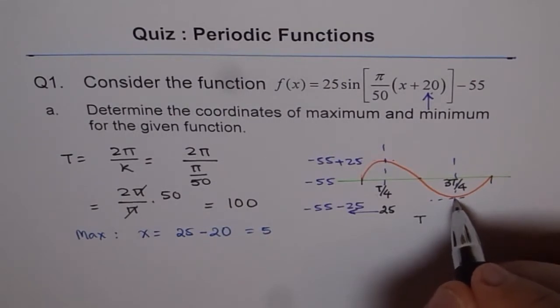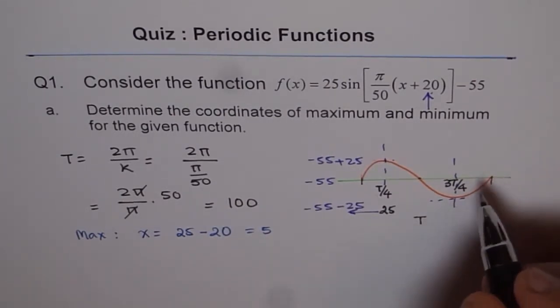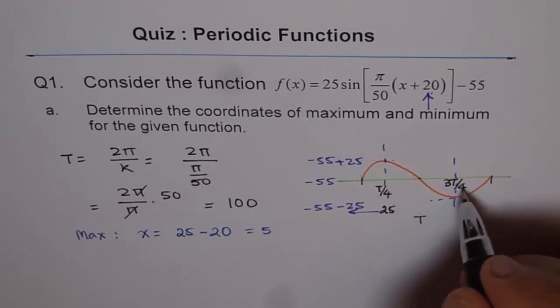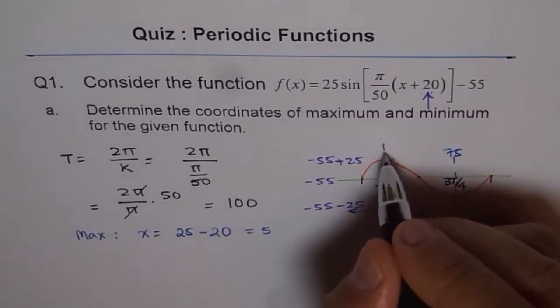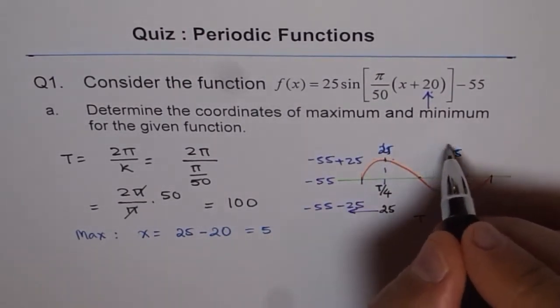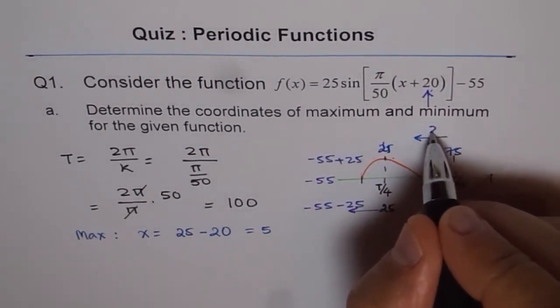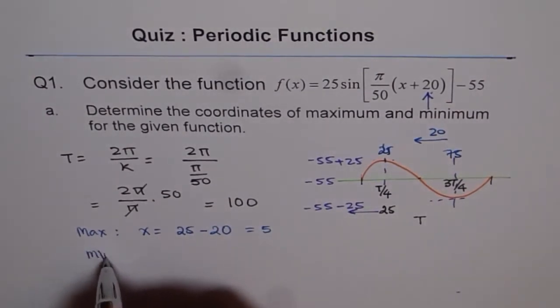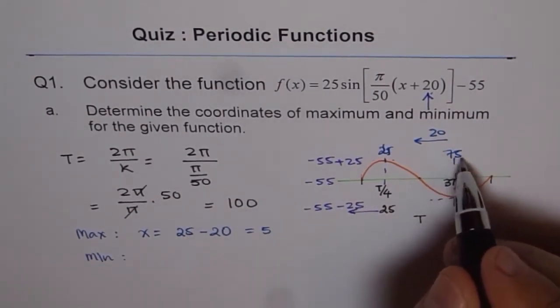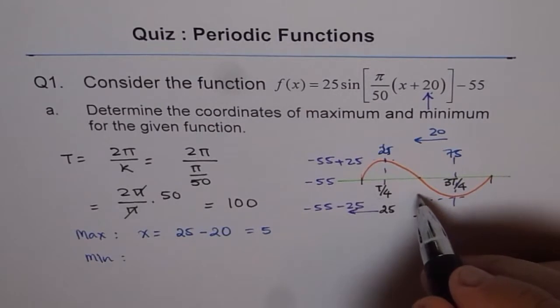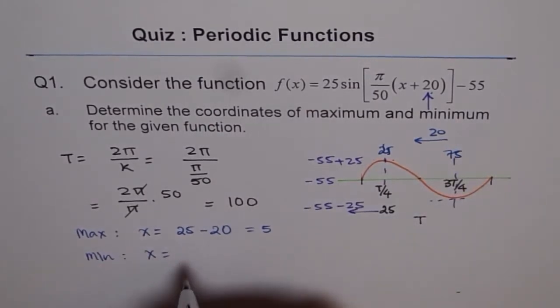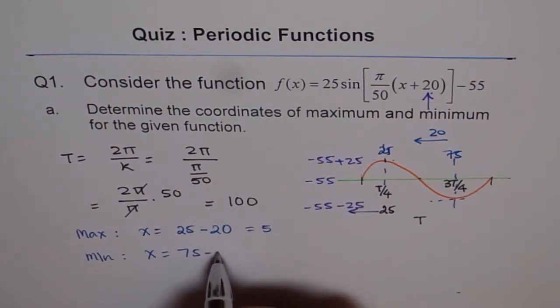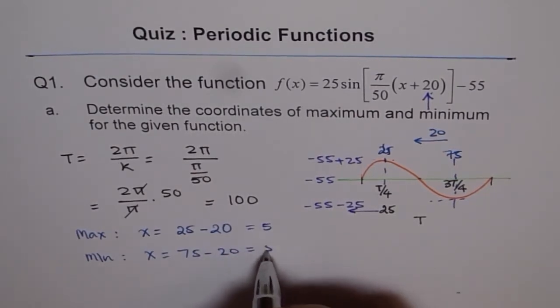And the minimum will occur, that also shifts by 20 units to the left. So 3T by 4 is actually 75. This is 75, in normal case, this is 25. Now, both move 20 units to the left. So, minimum will occur at 75 minus 20, which will give us x equals to 75 minus 20, which is at 55.